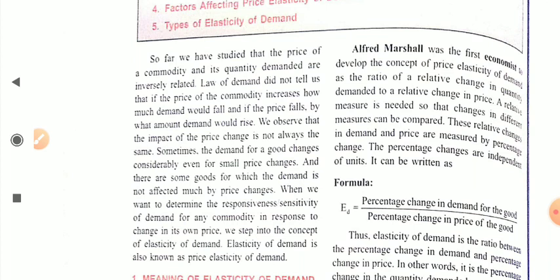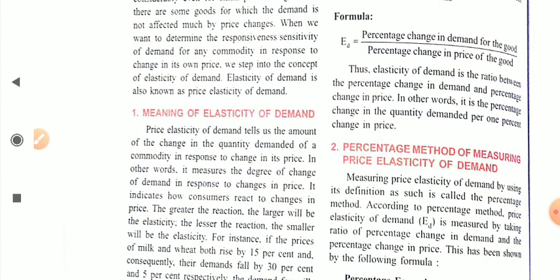After Marshall, many other economists emerged who defined different types of elasticity of demand. But this term was first coined by Alfred Marshall. Elasticity of demand means percentage change in demand for the commodity divided by percentage change in price of the commodity.